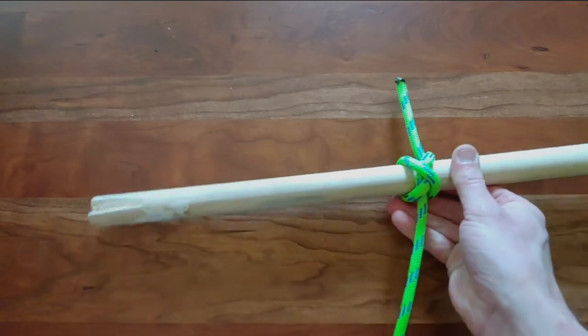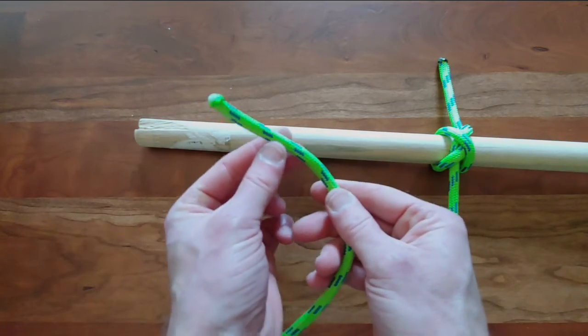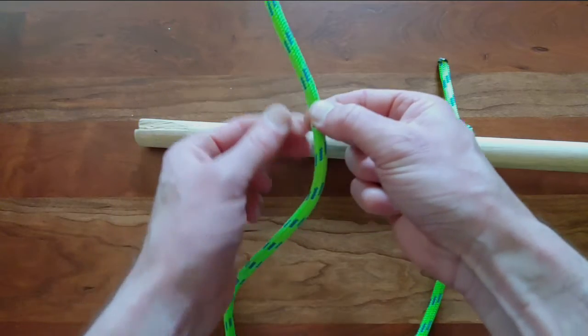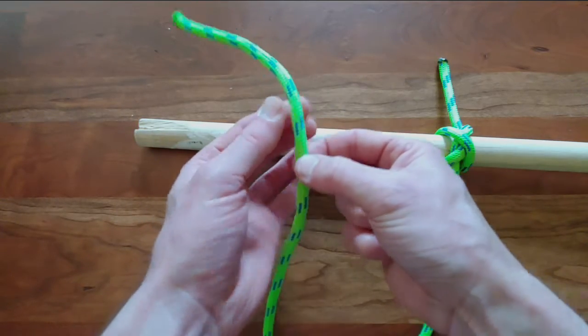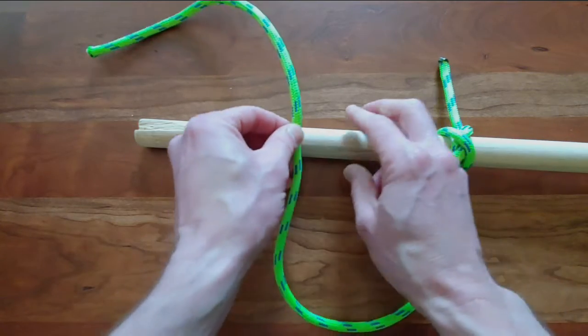Now it's important that I count off or mark off the exact same amount of rope on the other side. So there's two, three, four, five, six, six and a half, something like that.